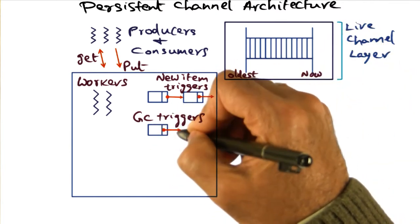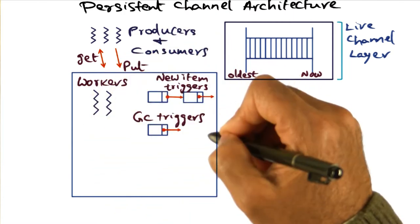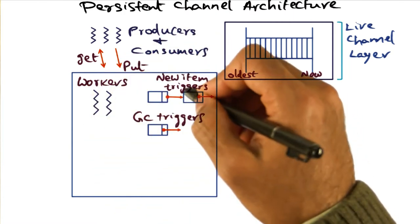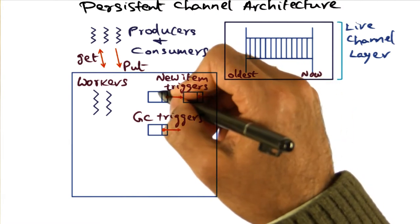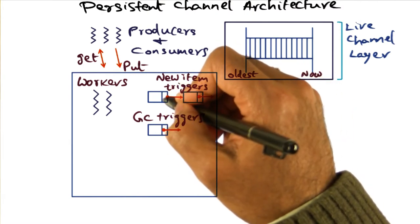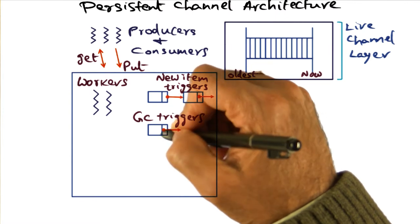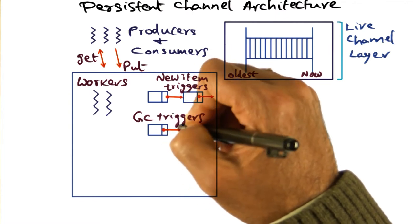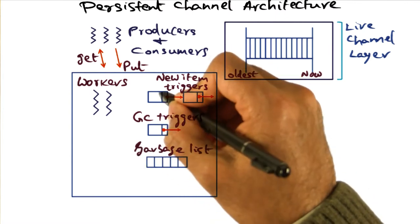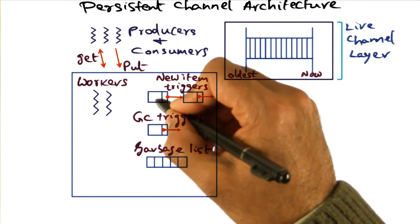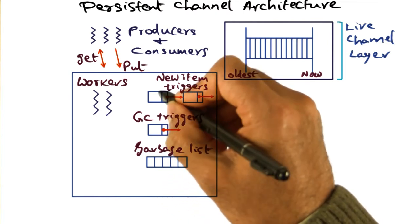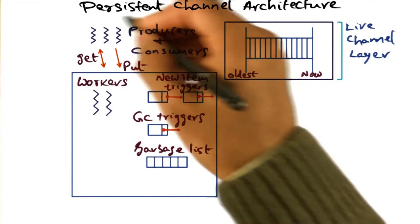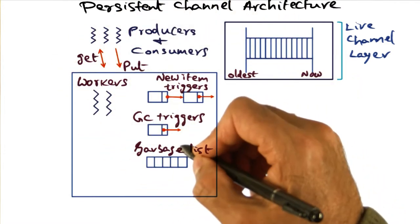There is a garbage collection trigger that is part of the runtime system, looking at information in the channel to determine what items have become old and can therefore be thrown away. Those are the GC triggers. The GC triggers will move data that have become ancient, so far as this channel is concerned, and move it into the garbage list, meaning that these items are no longer relevant from the point of view of this application.